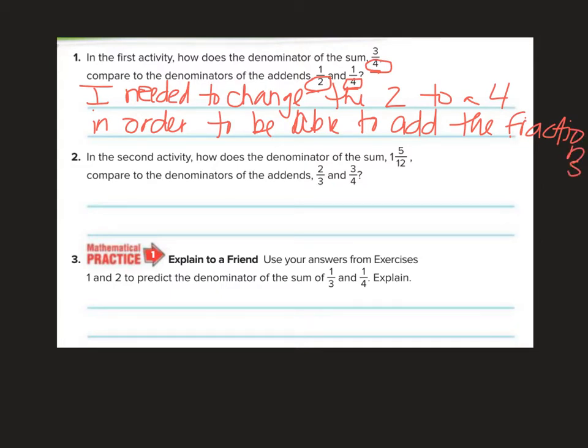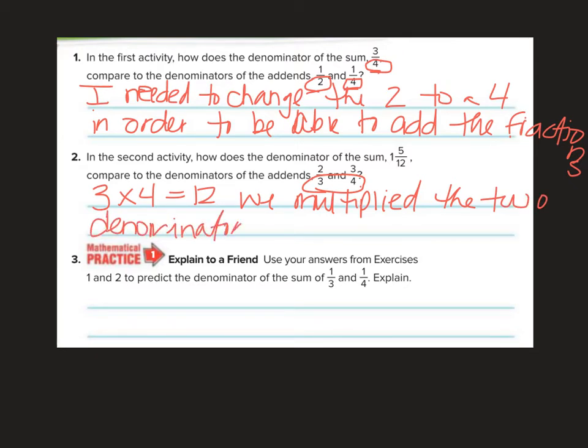In the second activity, how does the denominator of the sum one and five twelfths compare to the denominators of the addends? Look at this. Three times four equals twelve, so we multiplied the two denominators to get the product. Oh that's a sum isn't it? I thought we were multiplying, sorry. This talking multiplying it should be sum to get the sum. Okay.